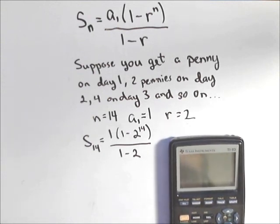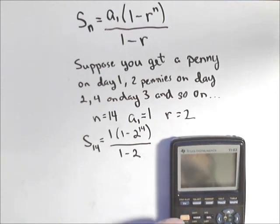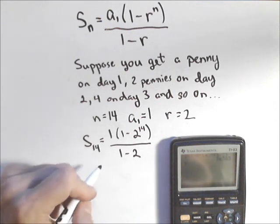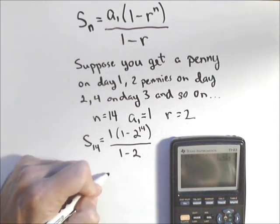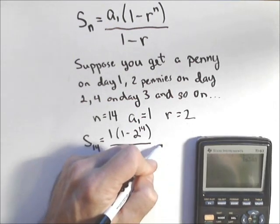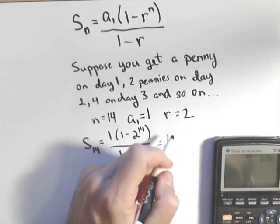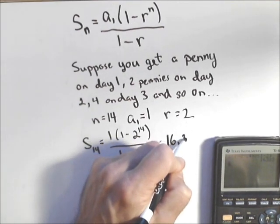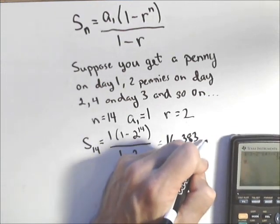So one minus two to the 14, and you'll actually realize the power of doubling, which is pretty significant. The denominator has to go in parentheses too: one minus two. So after 14 days we will have 16,383 pennies.